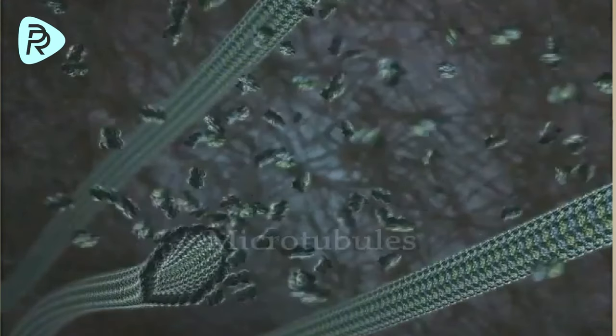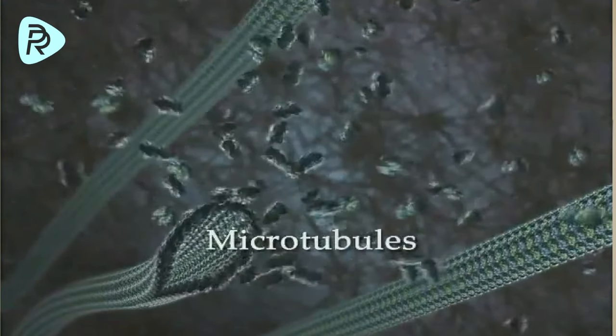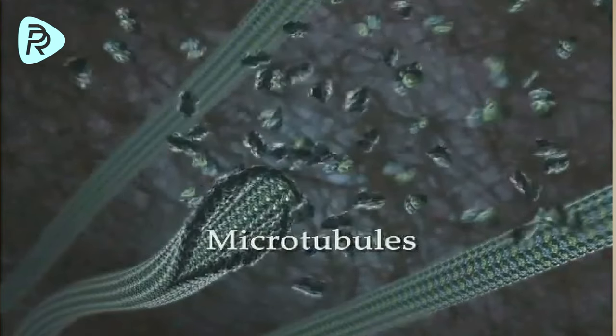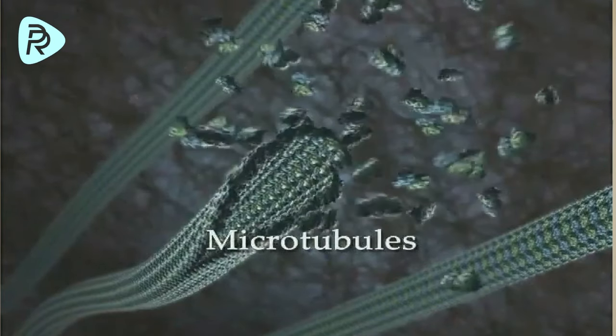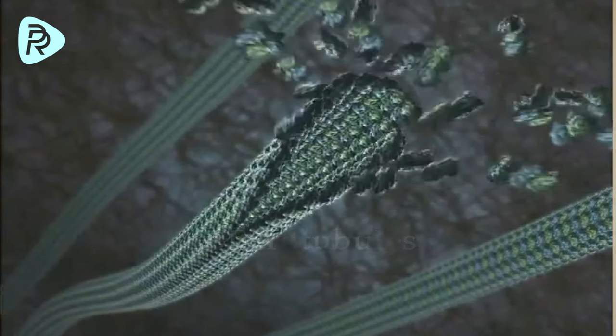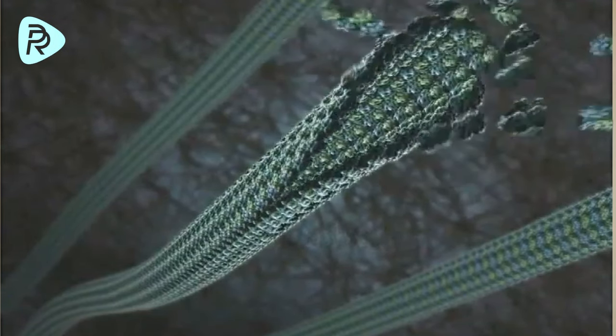Sometimes organelles or other matters may need to be transported from a place to another. For these, temporary rails called microtubules are laid down for them. Certain proteins are tasked with the organelles movement on the track. These proteins are called motor proteins.